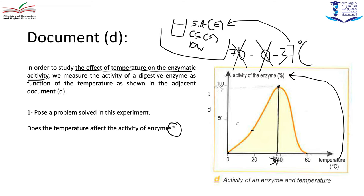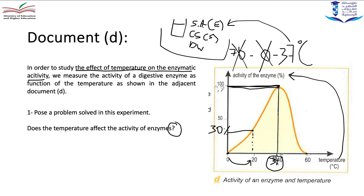At 0 degrees Celsius, the enzymatic activity is null — no digestion takes place. At 20 degrees Celsius, the enzymatic activity is about 30%, so the enzyme is partially activated, not completely. At 37 degrees Celsius, the enzymatic activity reaches 100%. This is the best temperature — it's the optimum temperature.